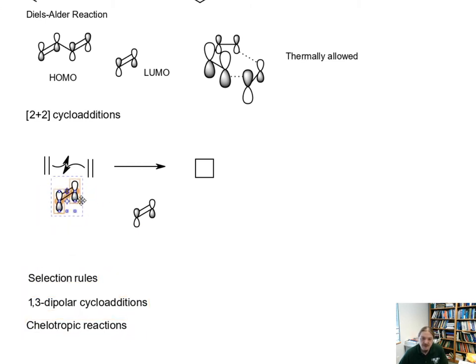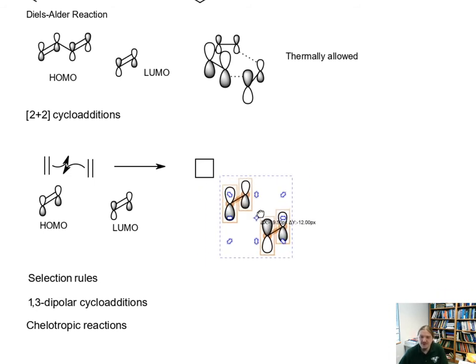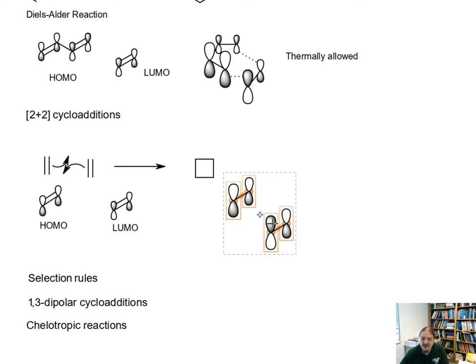So here I have the HOMO of one ethene molecule. This thing has electrons in it. And I've got the LUMO of the other ethene molecule, an empty orbital. For the bonding to happen here, these two things would have to come together with some kind of constructive overlap. But if I bring them together and make those look like they're going to come together, we can get overlap but the symmetry of these orbitals don't match. So we're not going to get bonding under thermal conditions.